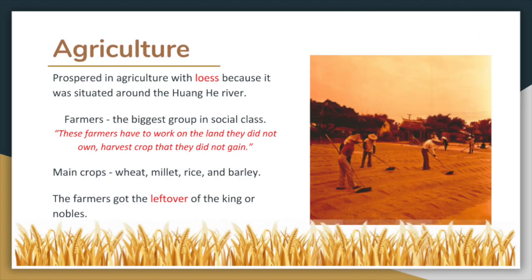Agriculture. The Shang dynasty prospered in agriculture because it was situated around the Huanghe River. There were many farmers in the Shang dynasty. It was the biggest group in the social class. These farmers had to work on land they did not own and harvest crops that they did not gain. Main crops were wheat,